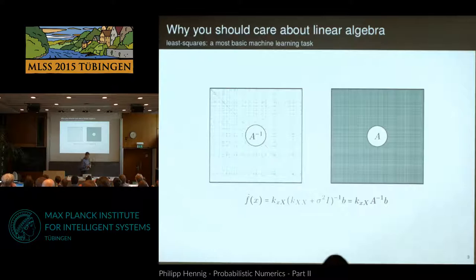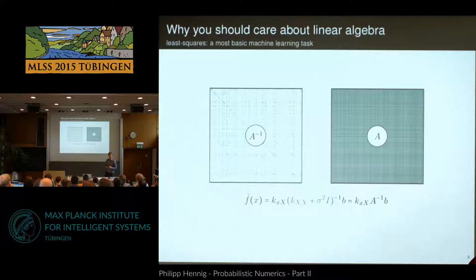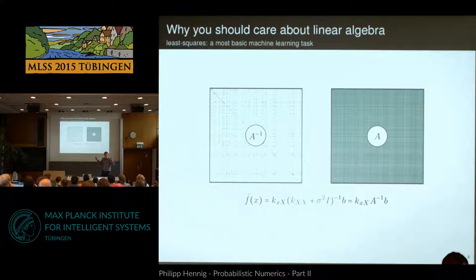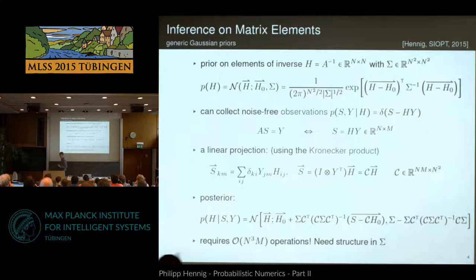Let's say we didn't know anything about numerical linear algebra. It's 1803, we don't know how to invert matrices, but we know they have interesting properties. We would like to come up with a Bayesian matrix inversion algorithm. How would we do that? We do it exactly the same way we build a Bayesian integration method or a Bayesian solver for differential equations. You start with a generative model — a joint probability distribution over the things you can observe and the things you don't know, which is the inverse of this matrix.